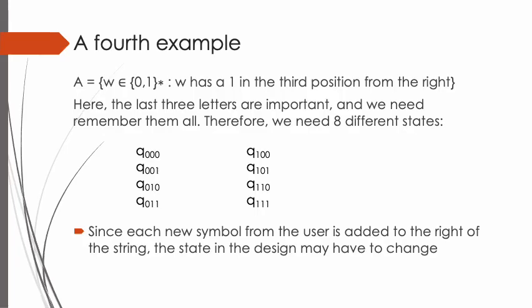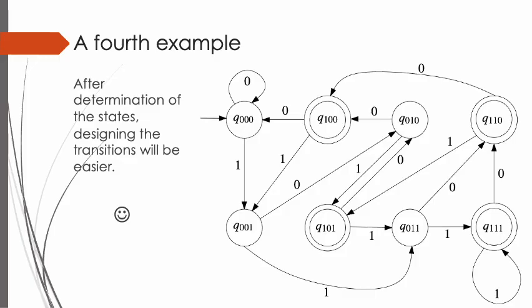A fourth example. A equals the set of W in {0,1}* such that W has a 1 in the third position from the right. Here the last 3 letters are important and we need to remember them all. Therefore, we need 8 different states, starting with Q000 and going up to Q111. Since each new symbol from the user is added to the right of the string, the last 3 letters of the string will change and the state in the design may have to change to another state. After determining the states, designing the transitions will be easier. Please try to understand the transitions by checking them one by one. If the transition diagram still seems complicated, go back and review how we determined the total number of states.